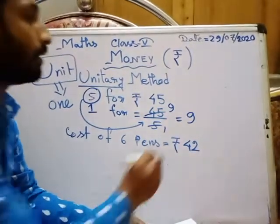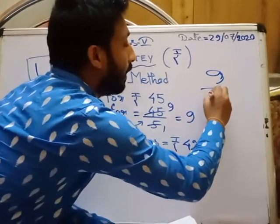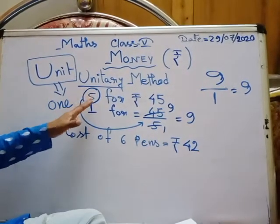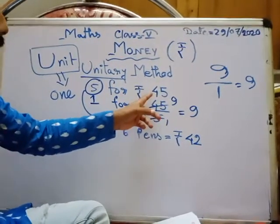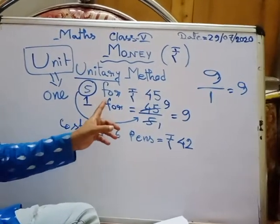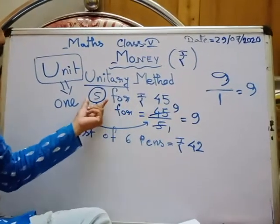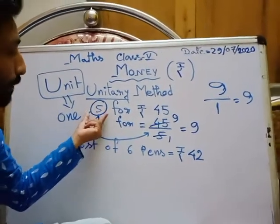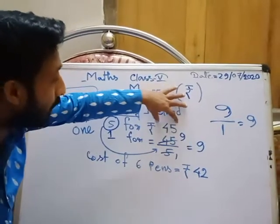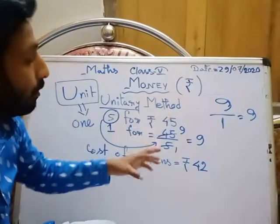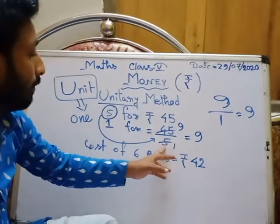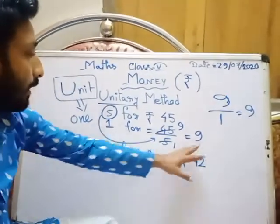So it becomes 9 over 1, which equals 9, because any number divided by 1 is the number itself. In general, write the total amount as the numerator and the number of items as the denominator, then divide.